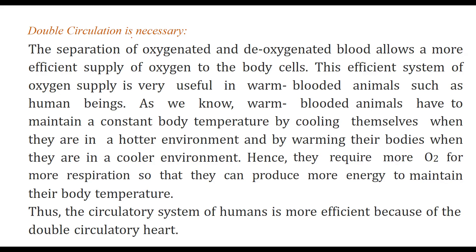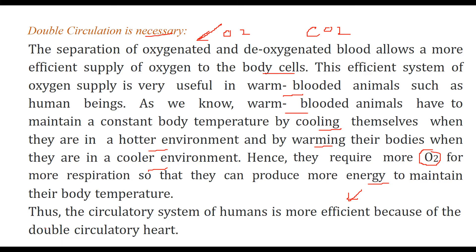Why is double circulation important? The separation of oxygenated and deoxygenated blood allows a more efficient supply of oxygen to blood cells. This is very important in warm-blooded animals like us, who must maintain a constant body temperature. Whether the environment is hotter or cooler, they need more oxygen for more respiration to produce the energy required to maintain body temperature. That is why the circulatory system of humans is very efficient because of the double circulatory heart.